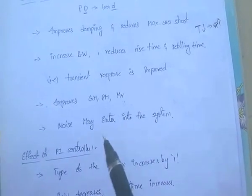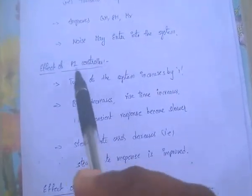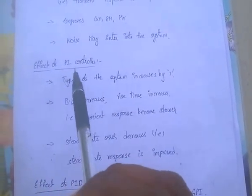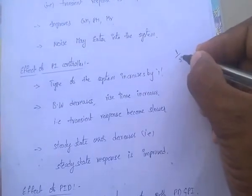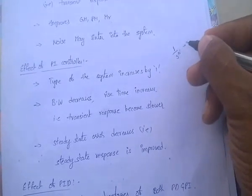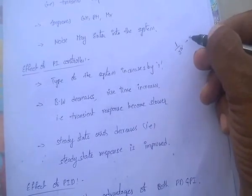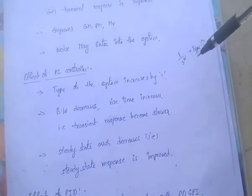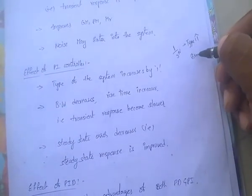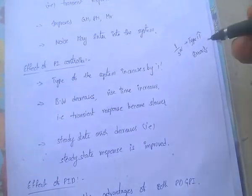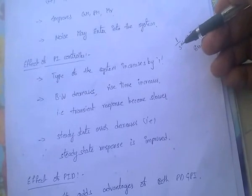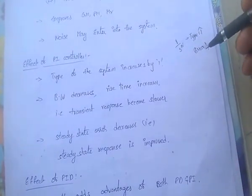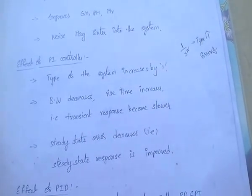Now the effect of the PI controller — proportional-integral controller. The integral term is 1/s^n. If we add 1/s, the type of the system increases. As type increases, the steady-state error decreases. That means it improves the steady-state response.